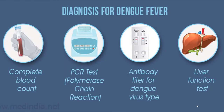Diagnostic tests include a blood test revealing decreased WBCs and importantly a decreased platelet count, which plays a major role in blood clotting. PCR, or polymerase chain reaction, detects virus particles in the body and is quite a sensitive test. Antibodies produced by the body against the virus can also be detected in the blood. Liver function tests may also be carried out, as deranged liver enzymes can signify severe illness and dengue shock syndrome.